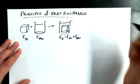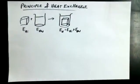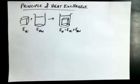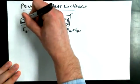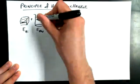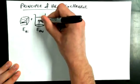If we take two containers and we know the thermal energy in one and the thermal energy of the other, and we put them together, the total thermal energy of the system is going to be the sum of the two thermal energies. Now let's say that this iron is 100 degrees Celsius and the water is 40 degrees Celsius.